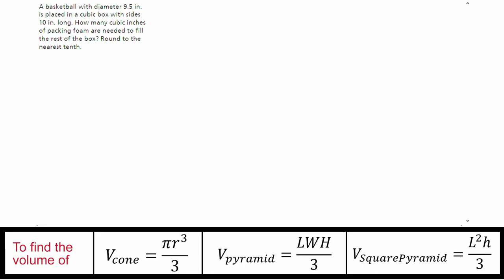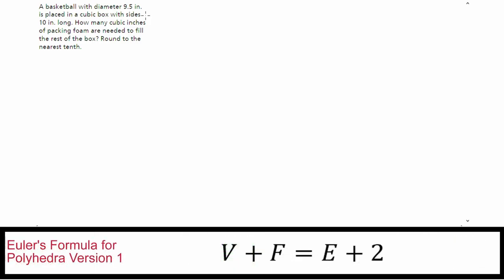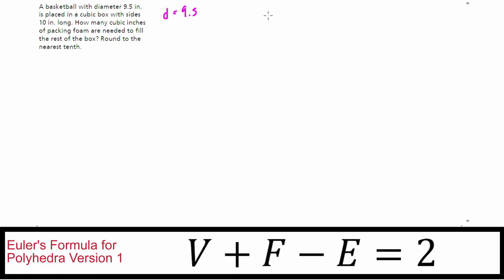Here's a real-world application. A basketball has a diameter of 9.5 inches — since we work in radius, dividing by 2 gives 4.75. It's placed in a cubic box with 10-inch sides. We need to find how many cubic inches of packing foam are needed to fill the rest of the box.